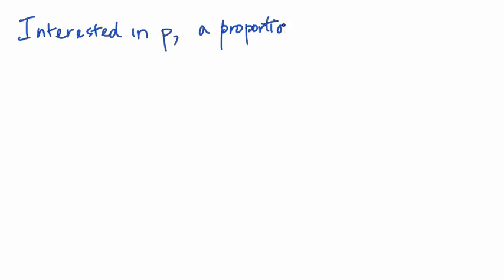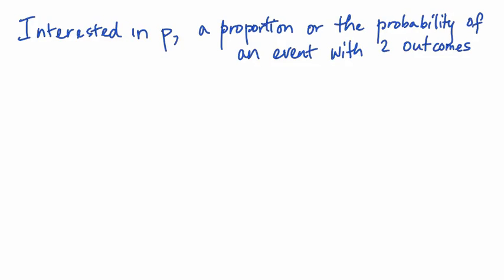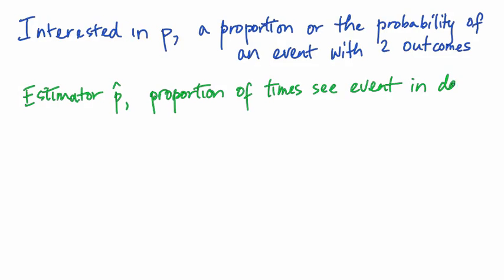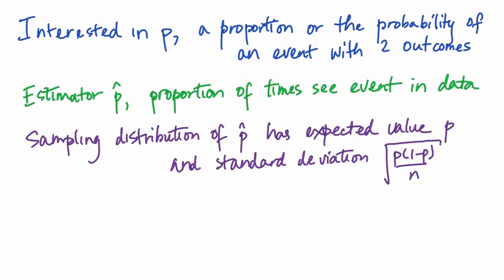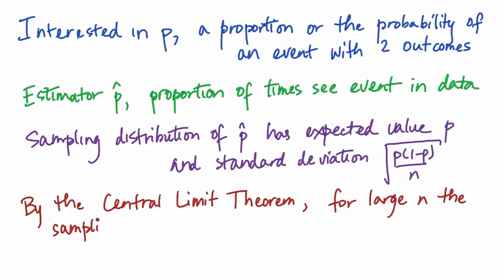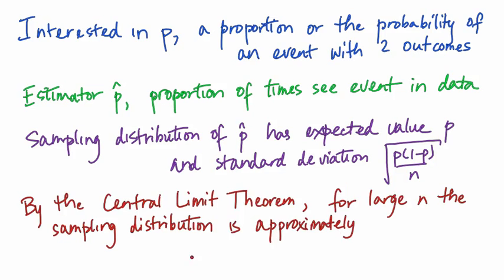To summarize: when estimating a parameter that is a proportion or probability of an event happening, and we know the parameter is p, and we estimate it with p-hat — the proportion of times we observe the event in our data — then the sampling distribution of p-hat has expected value p and standard deviation equal to the square root of p times (1-p) divided by n. For large sample sizes, a good approximation for the sampling distribution of p-hat is the normal distribution with mean p and variance p(1-p)/n.